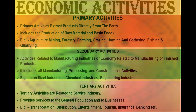First of all, primary activities. These are those activities which directly or indirectly extract products from the earth. They help to produce raw material and basic foods which are used in industry. For example agriculture, mining, forestry, hunting, gathering, etc.